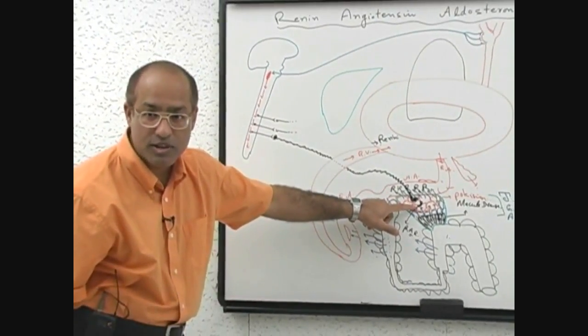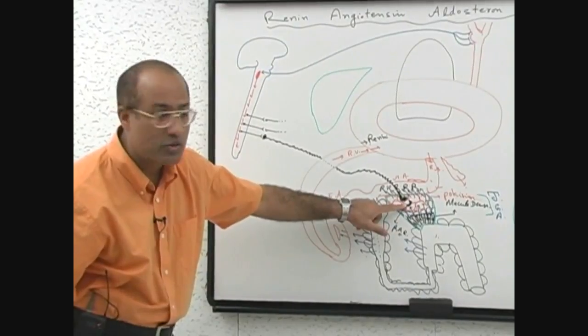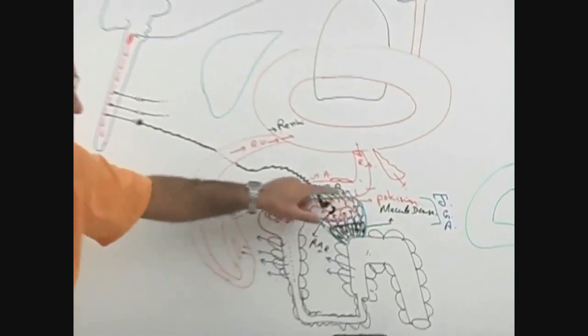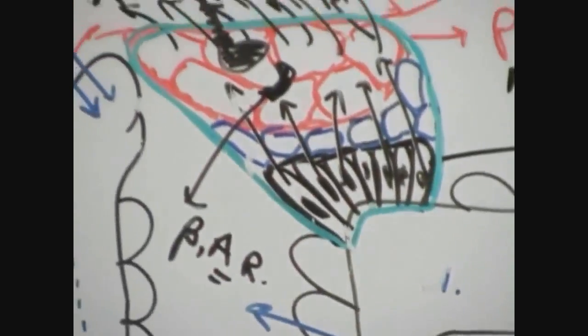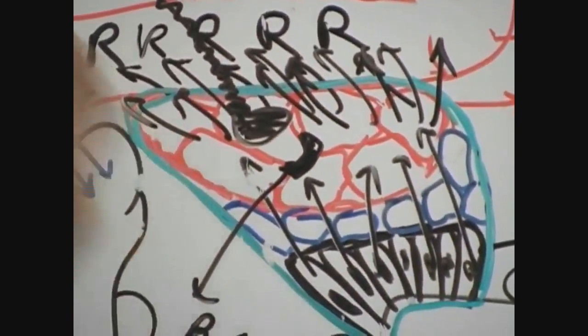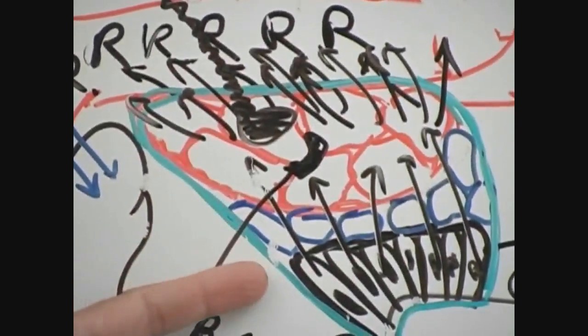Beta-1 adrenergic receptors are present here. Sympathetic outflow stimulates these beta-1 receptors, and when beta-1 receptors are stimulated here, more release of renin occurs. So how many mechanisms are there to release the renin from here?